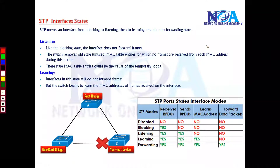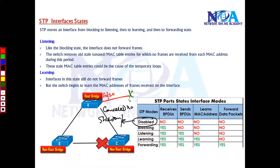Let's understand the different interface states of STP. The disabled state means the port is in a shut-down state or not connected. If a port like port number 20 is not connected to any device, it will not participate in spanning tree. That port will not receive or send any BPDUs, will not learn any MAC addresses or update the MAC table, or forward any packets.